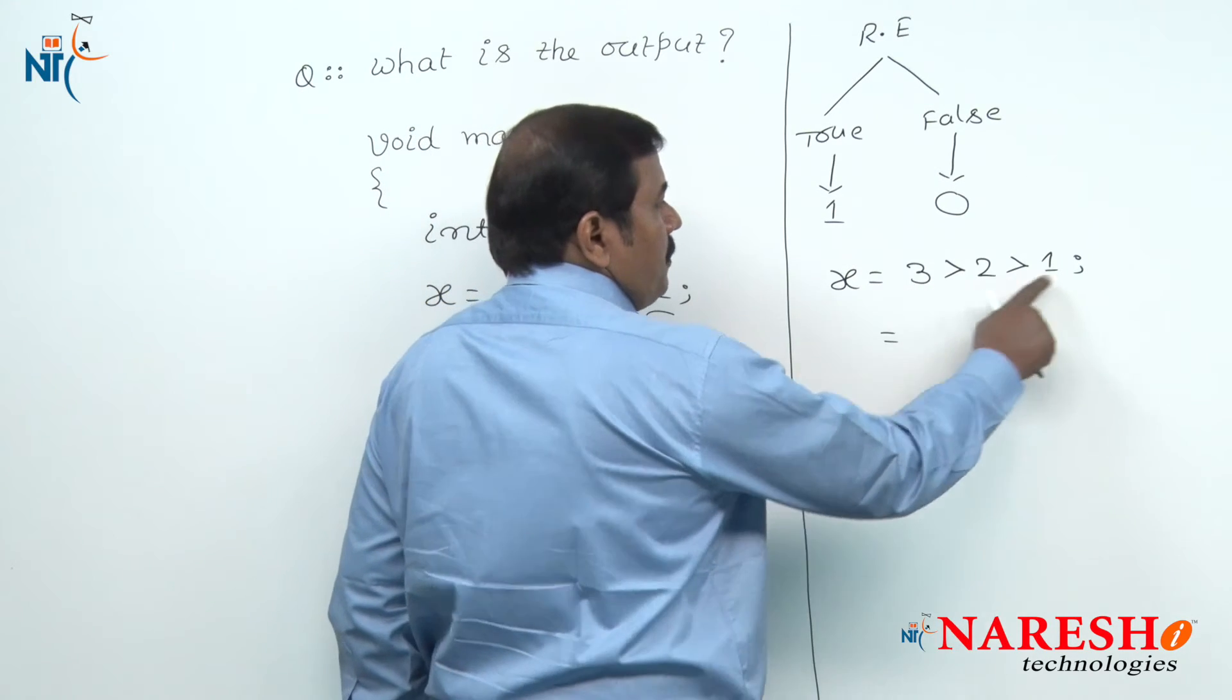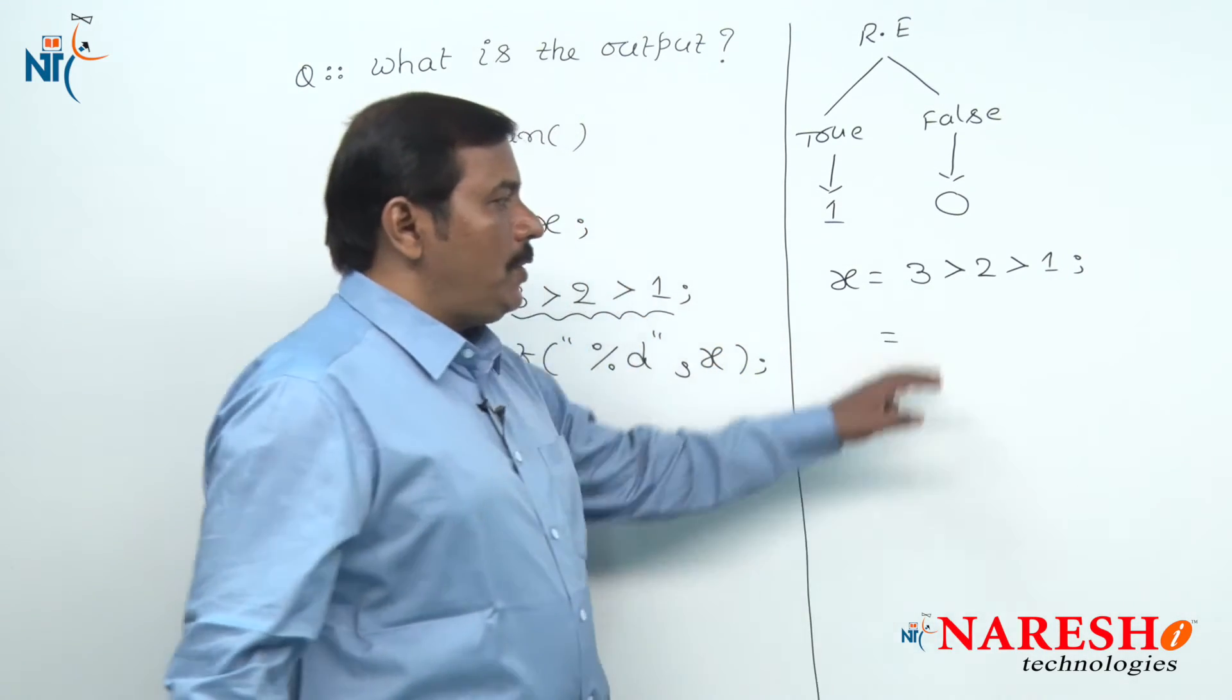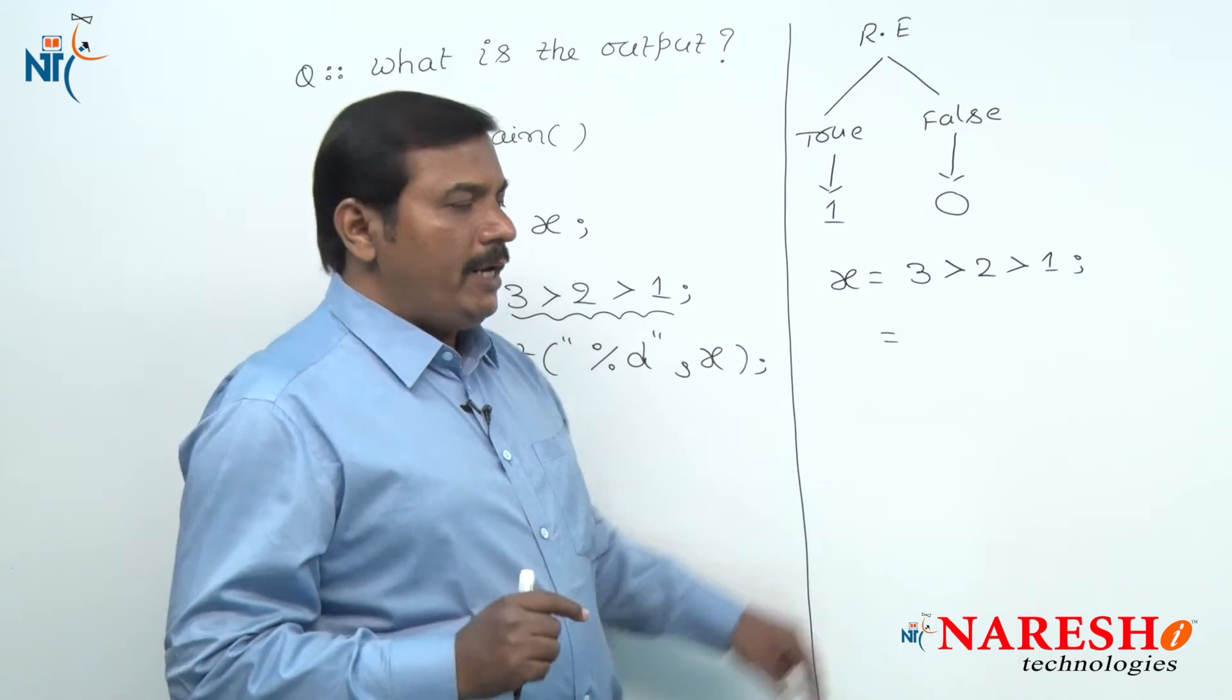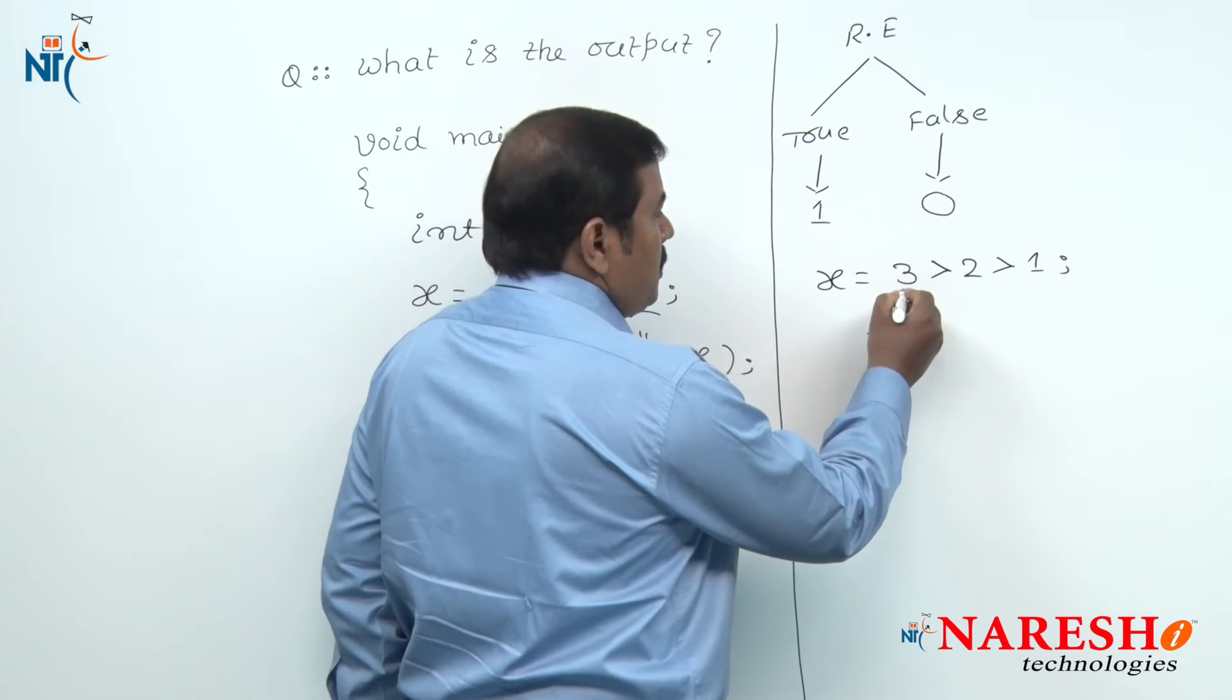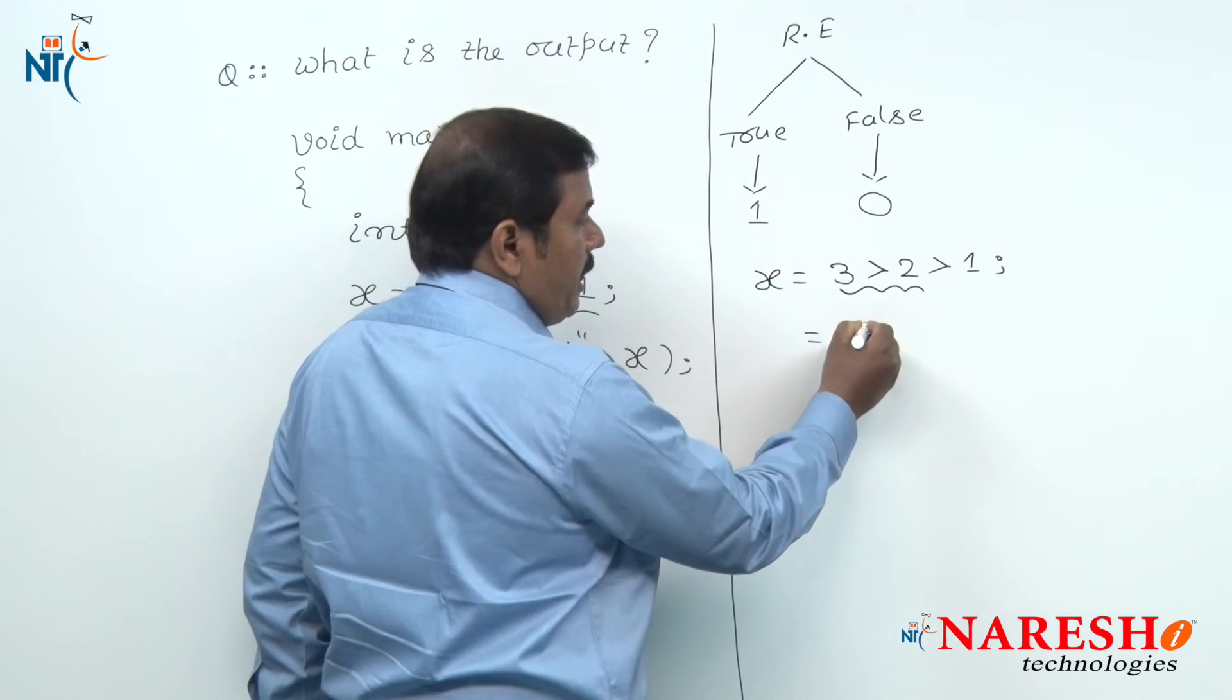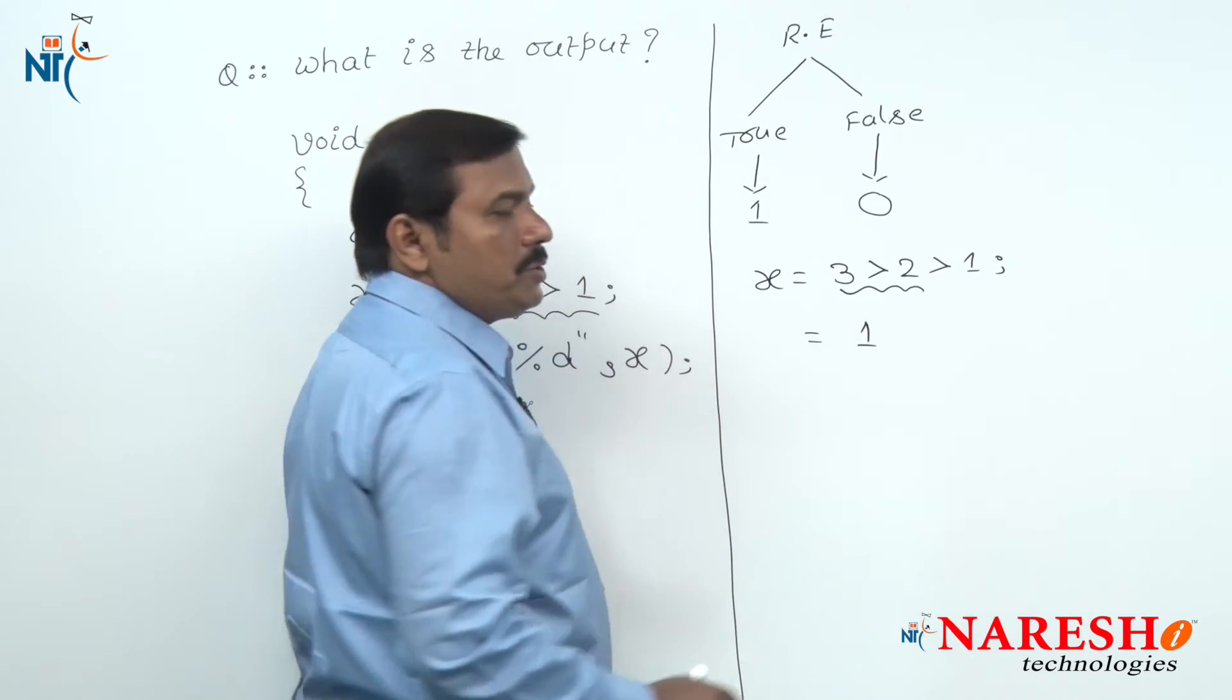So, left to right, this relational operator is encountered first. Hence, 3 is greater than 2 is evaluated first. 3 is greater than 2 is true. Hence, the value of this expression is 1.